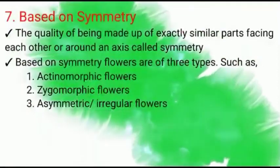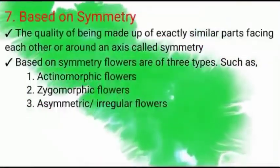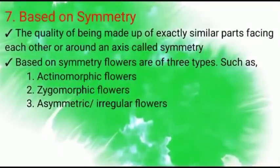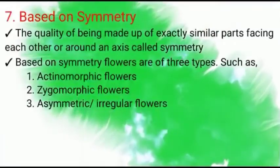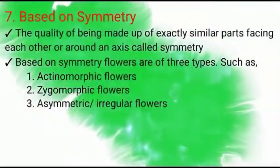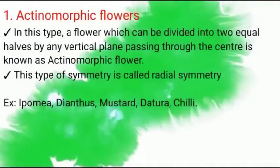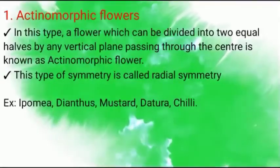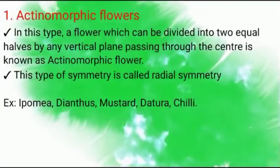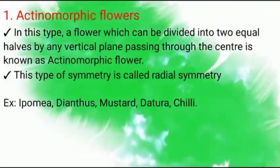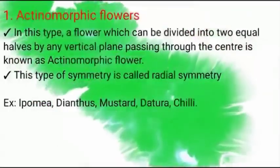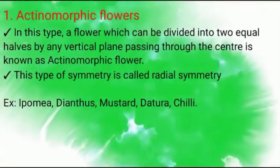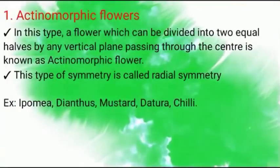The seventh type of classification of flowers is based on symmetry. Symmetry is the quality of being made up of exactly similar parts facing each other or around an axis. Based on symmetry, flowers are of three types: actinomorphic flowers, zygomorphic flowers, and asymmetric or irregular flowers. In actinomorphic flowers, a flower can be divided into two equal halves by any vertical plane passing through the center — this is called radial symmetry. Examples: Ipomoea, sweet potato, Dianthus, mustard, Datura, and chili.